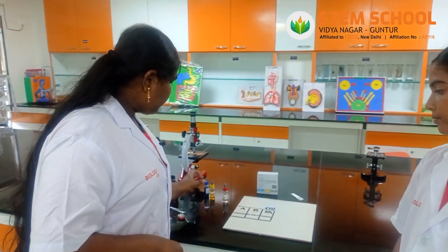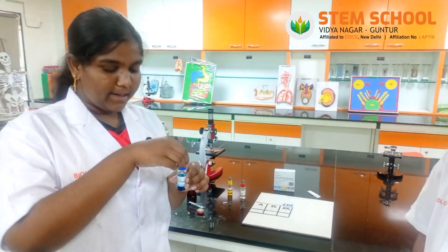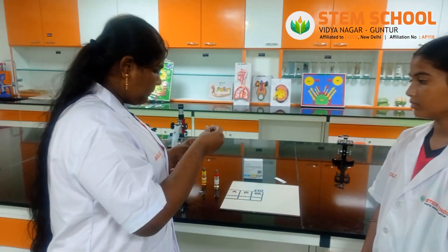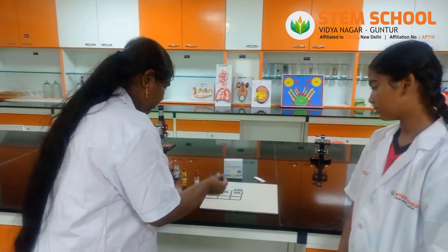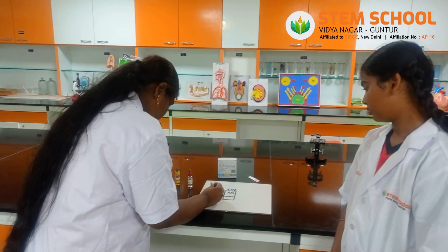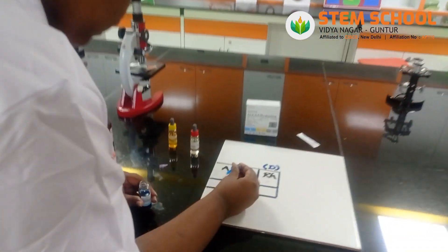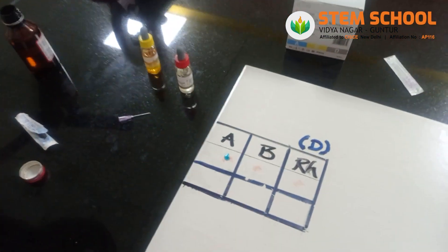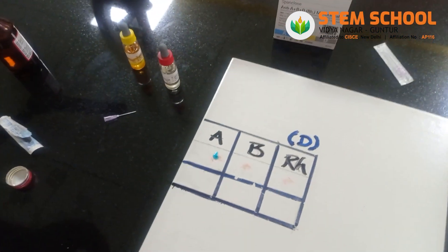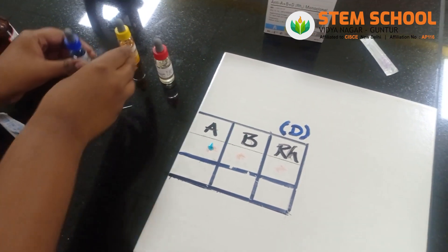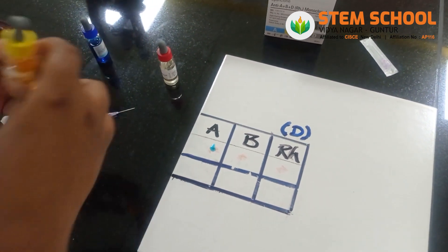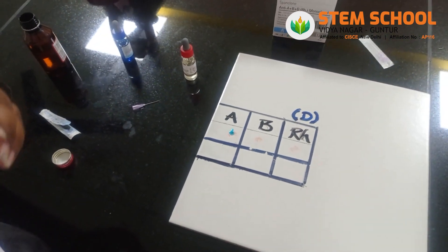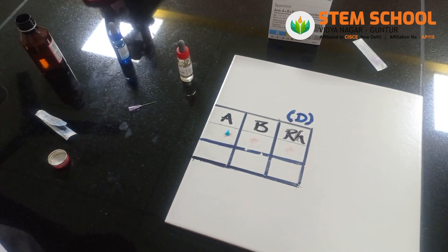First, we are going to take 1 drop of Antiserum A and mix it with the blood in the A block. Next, we are going to take Antiserum B and mix it with the blood in the B block.